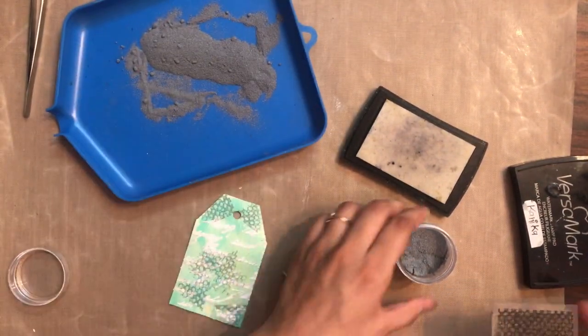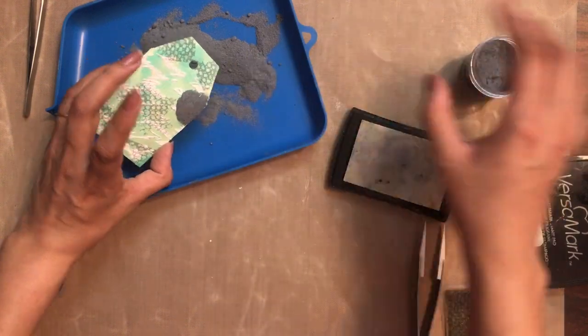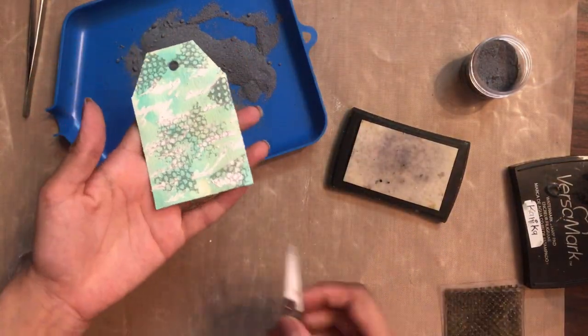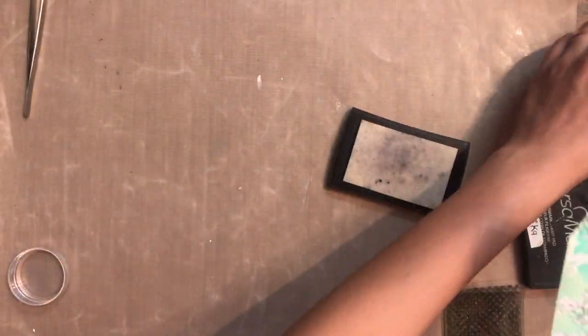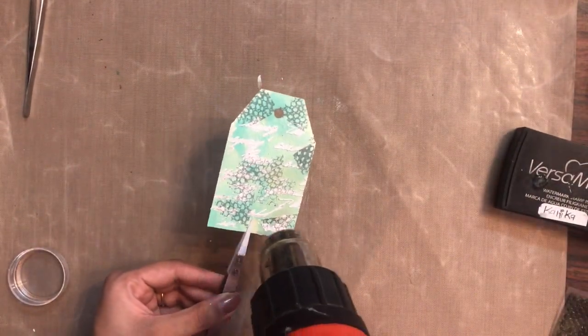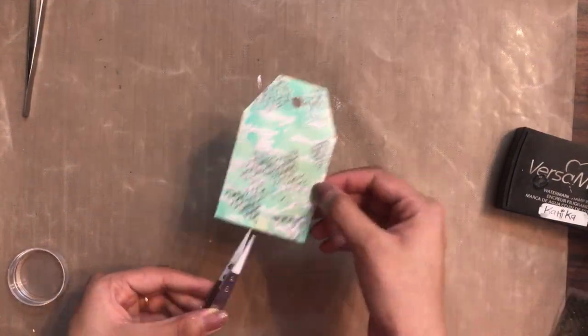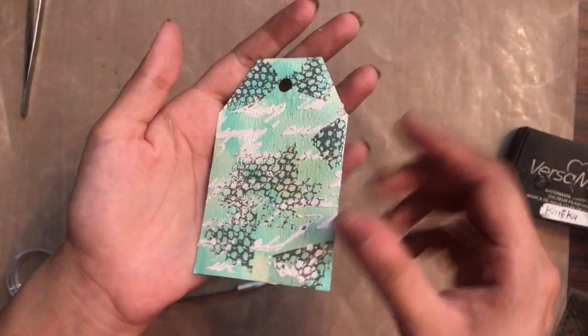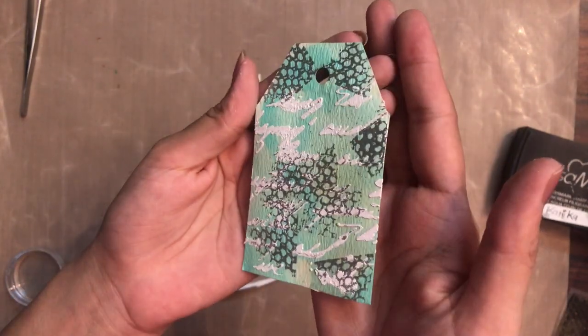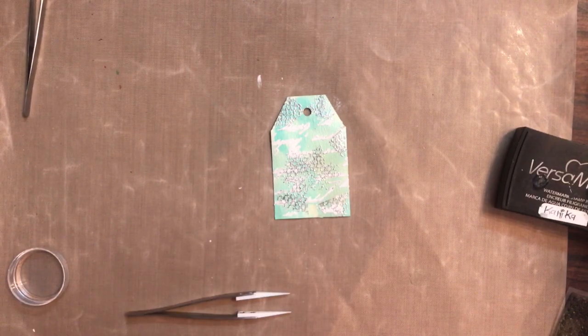With the help of tweezers, you can simply hold and remove the excess embossing powder. If you want to add more embossing, you can do that. Otherwise, hold your tag with the help of heat resistant tweezers and simply heat set the embossing powder. Can you see how beautiful already the background of our tag looks like? Credit goes to heat resistant tweezers - they just made my work easy.